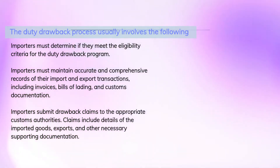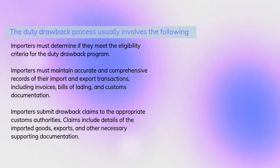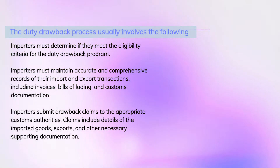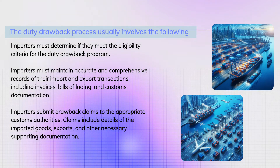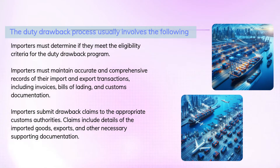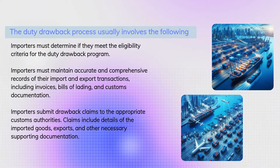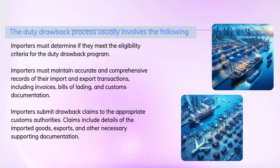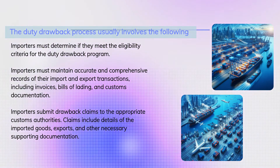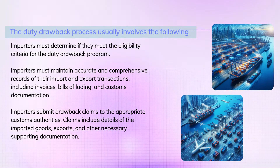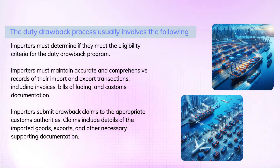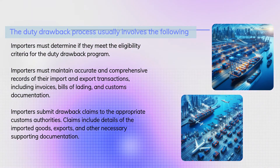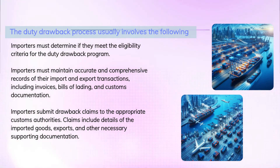The duty drawback process usually involves the following steps. Importers must first determine if they meet the eligibility criteria for the program. They must also maintain accurate and comprehensive records of their import and export transactions, including invoices, bills of lading, and customs documentation. Importers then submit drawback claims to the appropriate customs authorities, including details of the imported goods, exports, and other necessary supporting documentation.